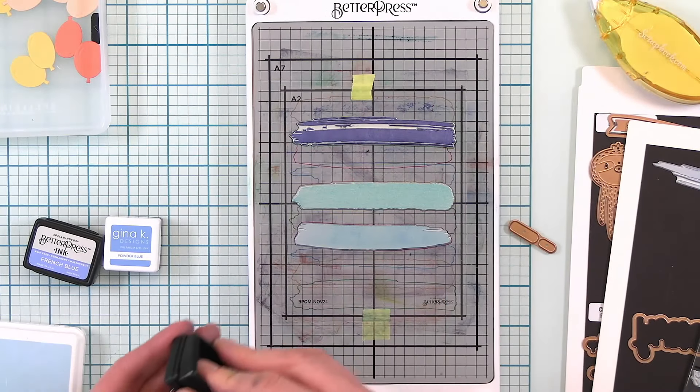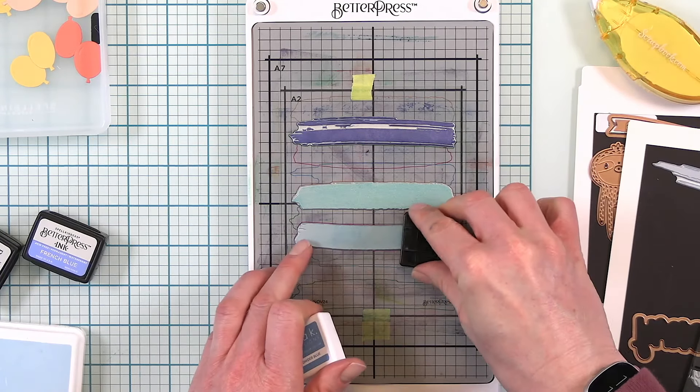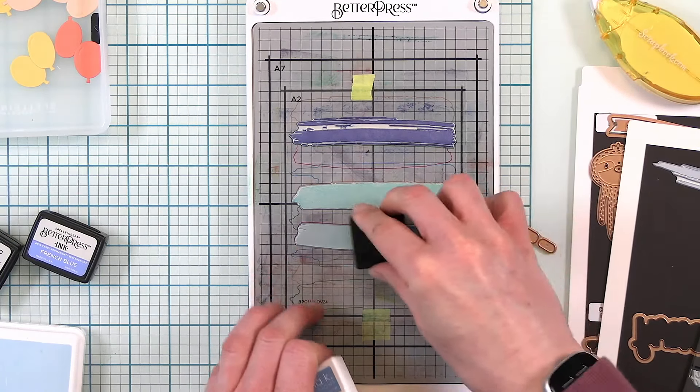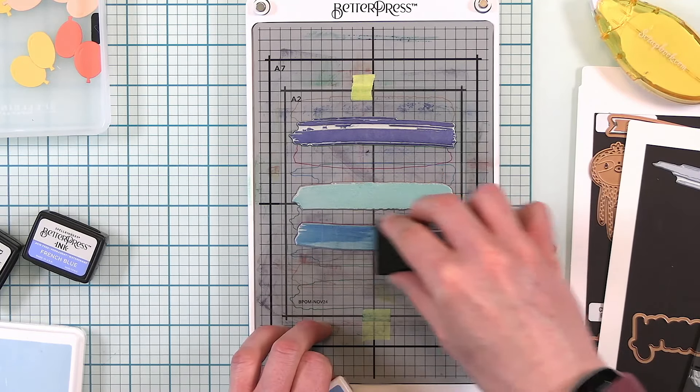Next I'm using Gina K ink. This has a similar type of linen but I find that it's easier to swipe it as well. Just a bit more of a heavy hand.